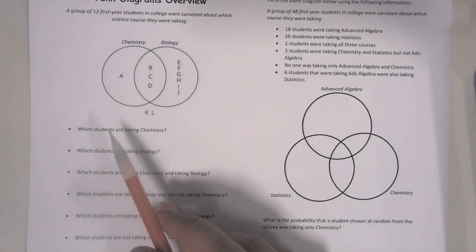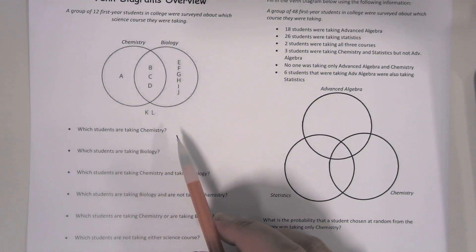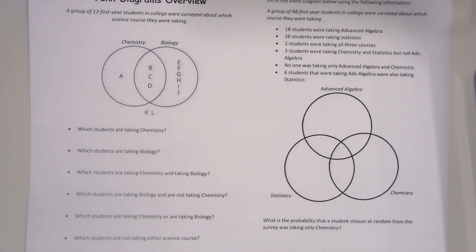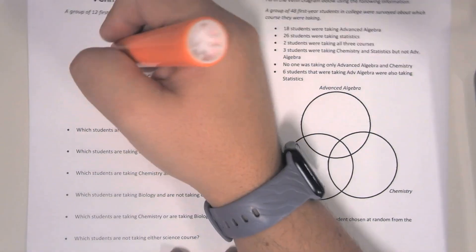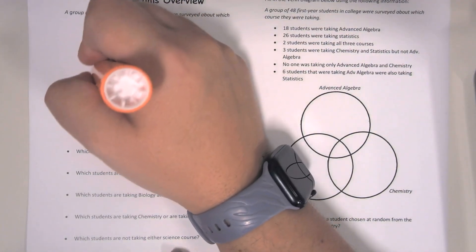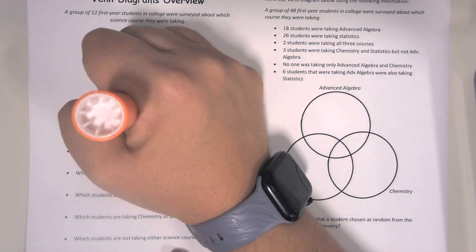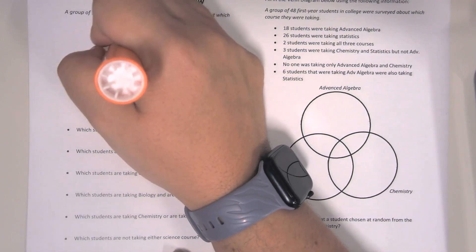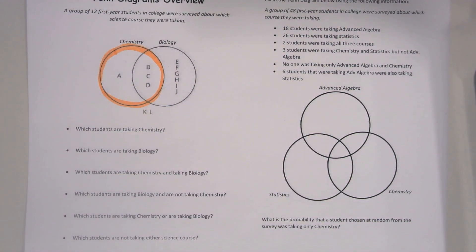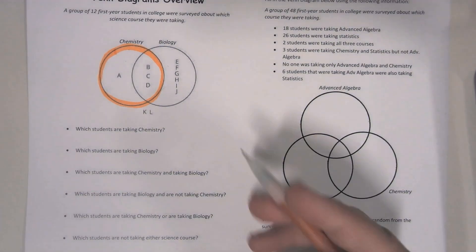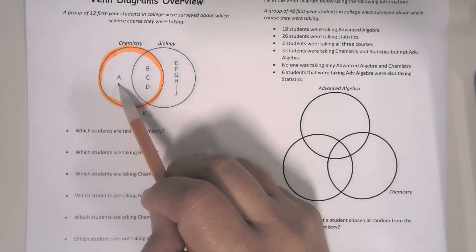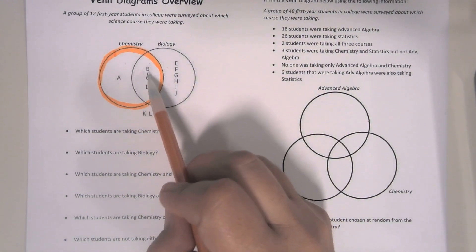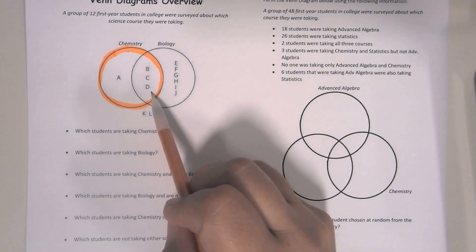It says which students are taking chemistry? So if I'm looking at the Venn diagram, anyone who is in this circle is taking chemistry. So chemistry would be student A, student B, student C, and student D.